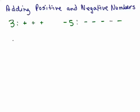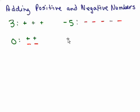Now, what about the number 0? You could have nothing at all, or how about this: what if I had 2 positives and 2 negatives? To make this simple I'm going to make the negatives red just to emphasize it. I'll do the positives in green and negatives in red. You could also write 0 with 6 positives and 6 negatives — basically, if the positives and negatives cancel themselves out, you've really got 0.